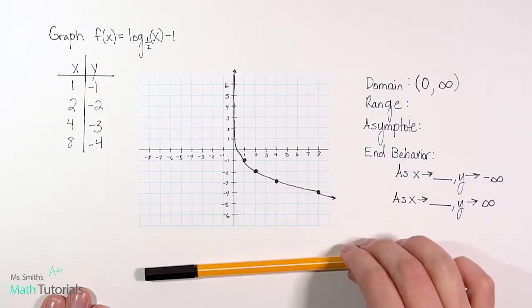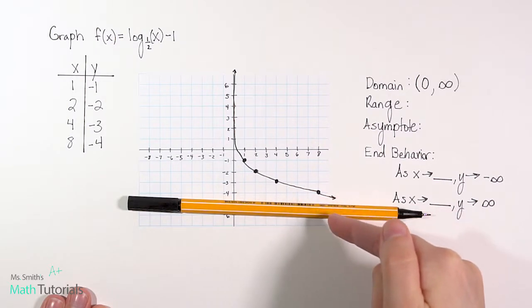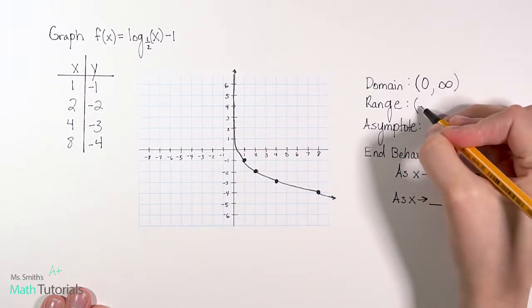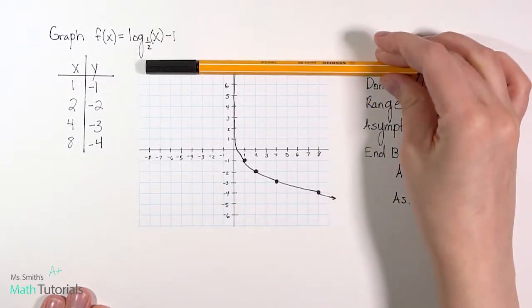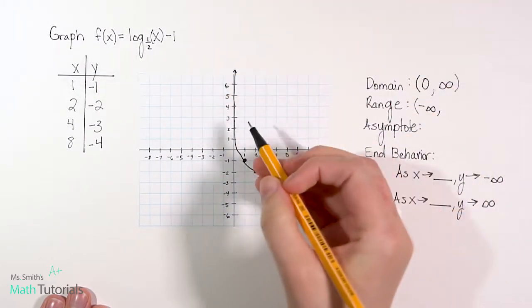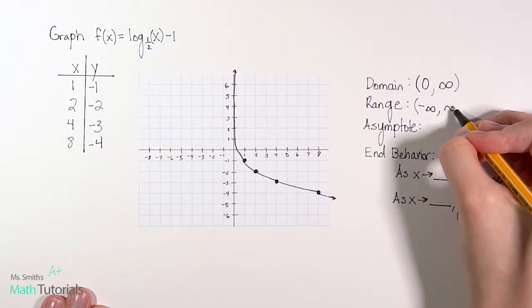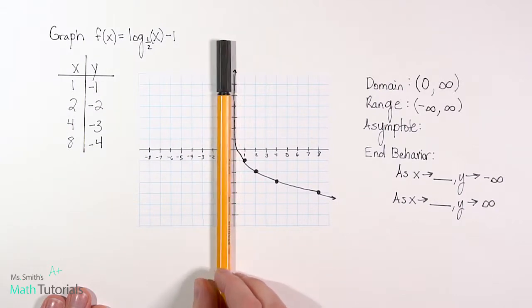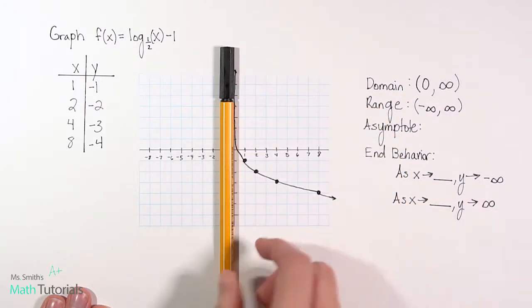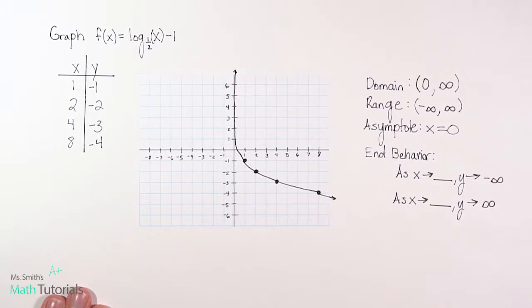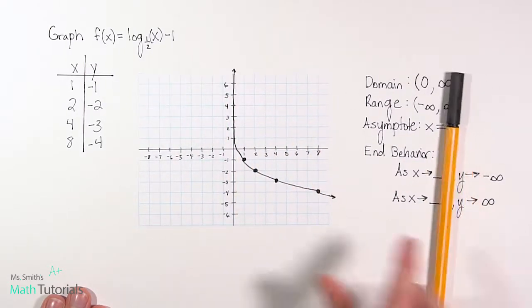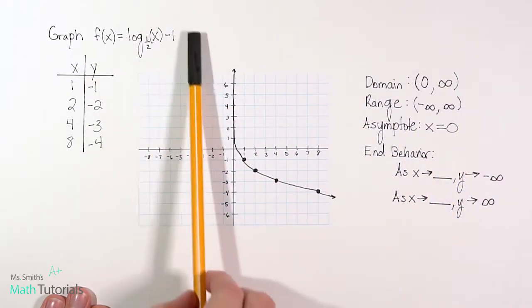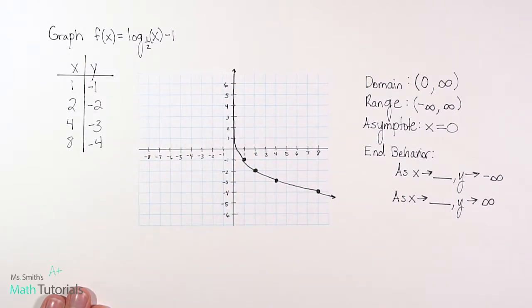For our range, bottom to top: on the bottom the first place we hit is an arrow that continues to move down forever, so we call that negative infinity. Coming in from the top, that arrow continues up forever, so positive infinity. For the asymptote line, they're asking about that vertical asymptote — it occurs at x equals 0. Note that on both examples in this video the asymptote happened to be x equals 0, but the asymptote will not always be x equals 0; it could be shifted anywhere based on transformations.